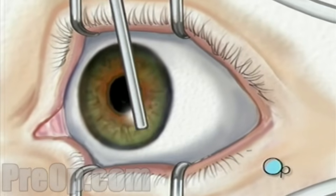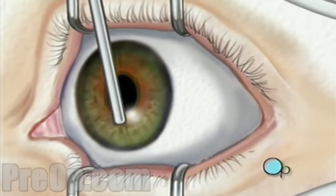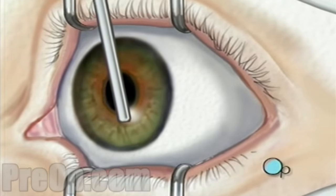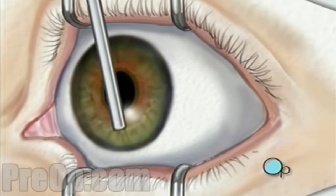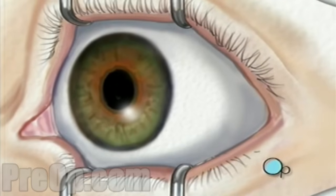When the operative field is numb, the doctor will carefully remove the epithelium, or top layer of cells, exposing the stroma, the non-cellular portion of the cornea.